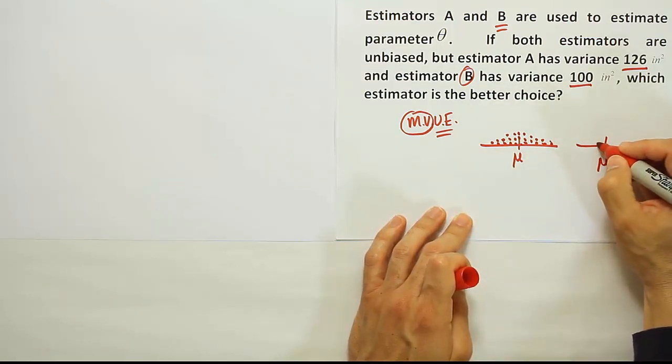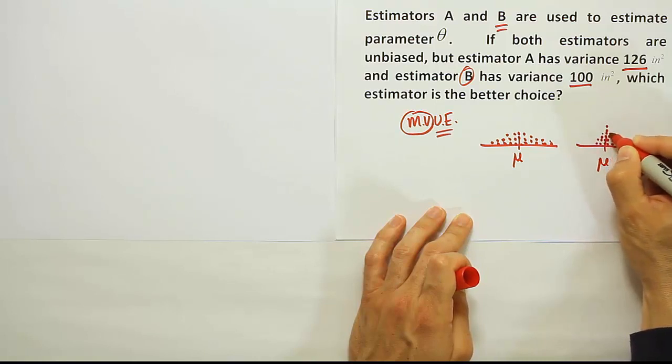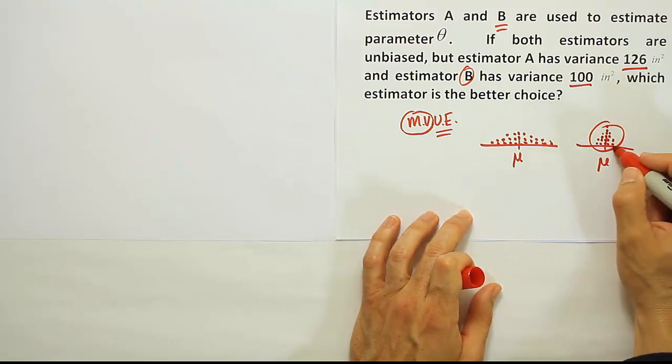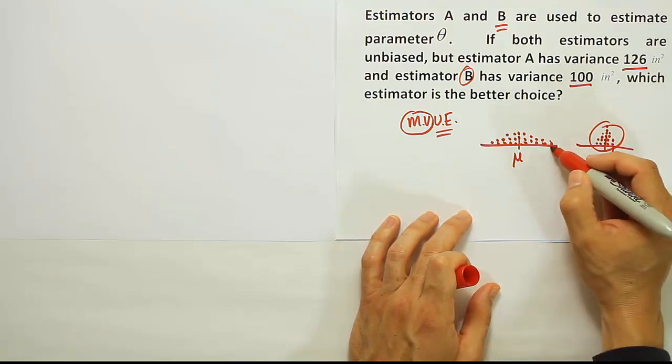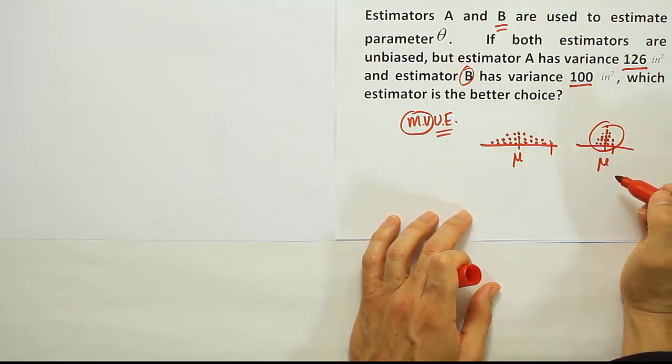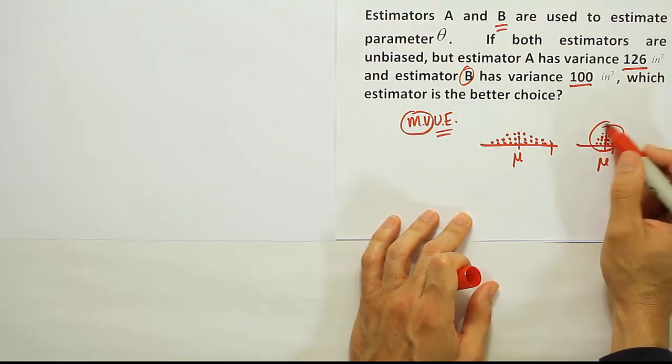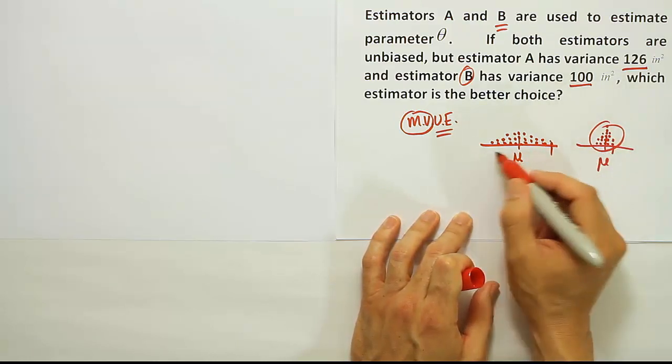But B might look like this. What you can see is that B is much tighter around the target parameter. So when it overestimates, it doesn't miss it by as much as it does when you're dealing with estimator A. Sometimes it'll overestimate, sometimes it'll underestimate. When it has a minimum variance or the smaller variance, it's going to miss it by less than what will happen in the other scenario.